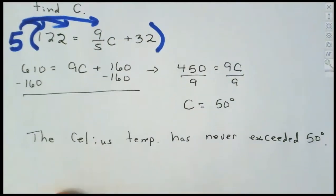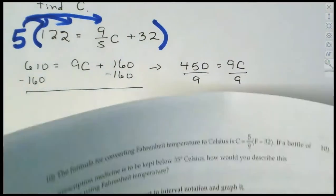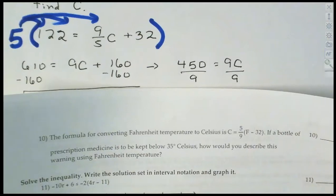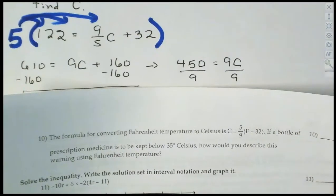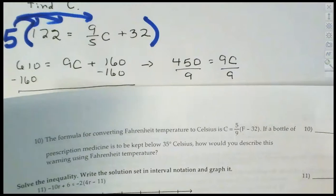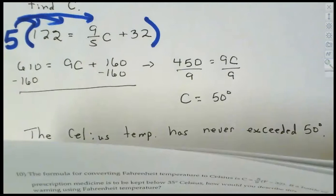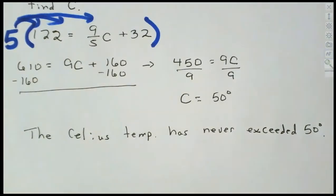That's all you needed to do — use that formula, convert it, and rewrite it. The question in your homework uses the same formula and the same process: plug the numbers in, convert, and reword. Now let's look at a perimeter problem.